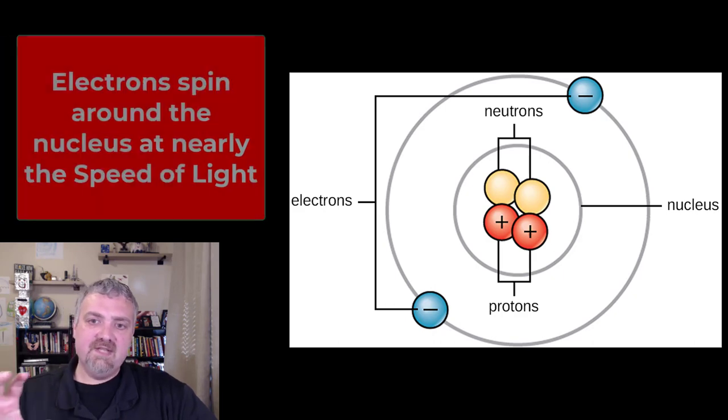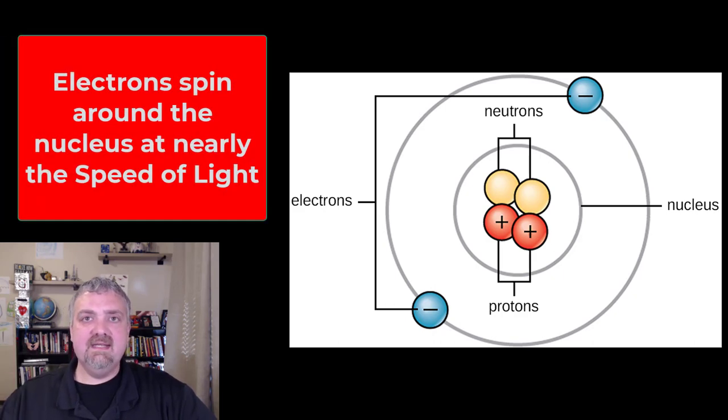The protons and neutrons stay in the nucleus. The electrons whirl around the outside of the nucleus. They spin around it at nearly the speed of light in what's called an electron cloud.